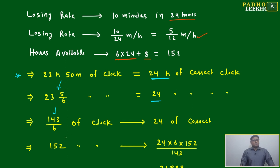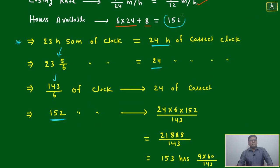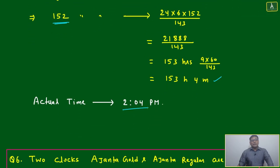143/6 of the clock equals 24 hours of correct time. So 152 hours of the clock - how many hours of correct time? 152 hours times 24 divided by 143/6 equals 153 hours 4 minutes. The actual time will be 2:04 PM. It's shown as 1 PM in clock, but actual time will be 2:04 PM.